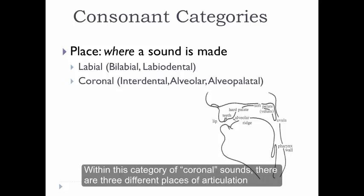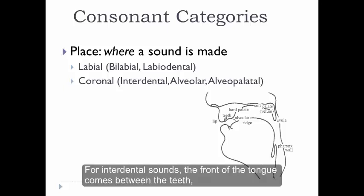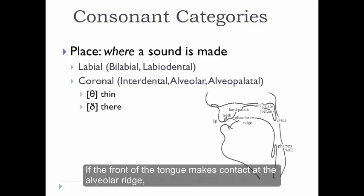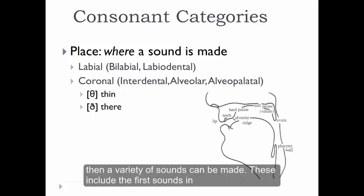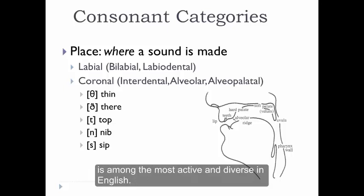Within this category of coronal sounds, there are three different places of articulation that are usually described. The first is interdental. For interdental sounds, the front of the tongue comes between the teeth, creating sounds such as those that begin the words thin and there. If the front of the tongue makes contact at the alveolar ridge — that small, flat area just behind the top teeth — then a variety of sounds can be made, including the first sounds in top, nib, and sip. The alveolar place of articulation is among the most active and diverse in English.